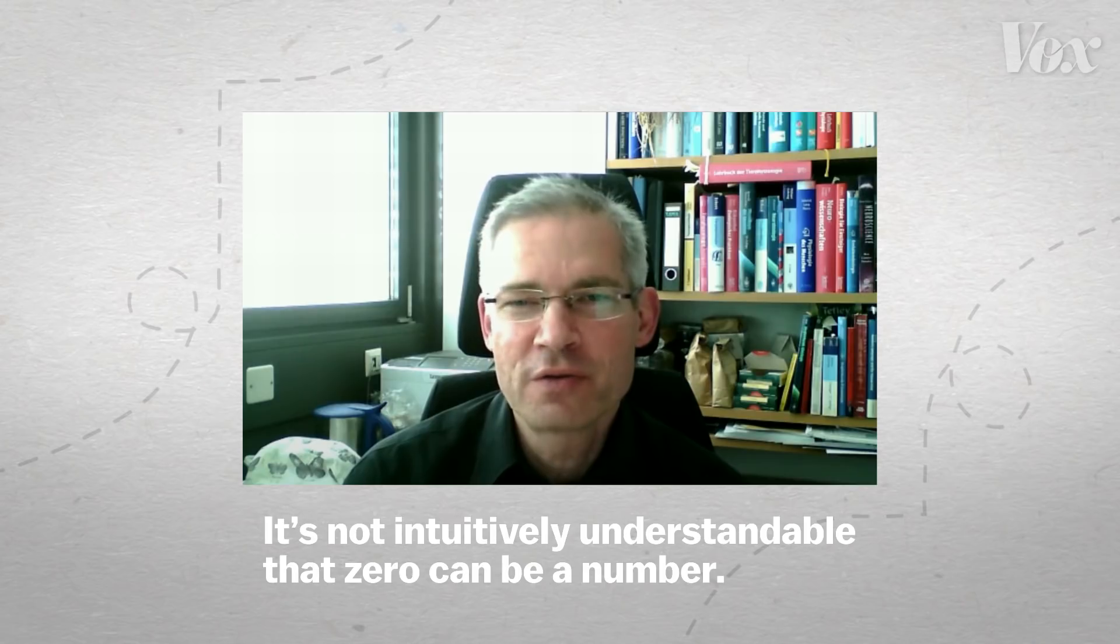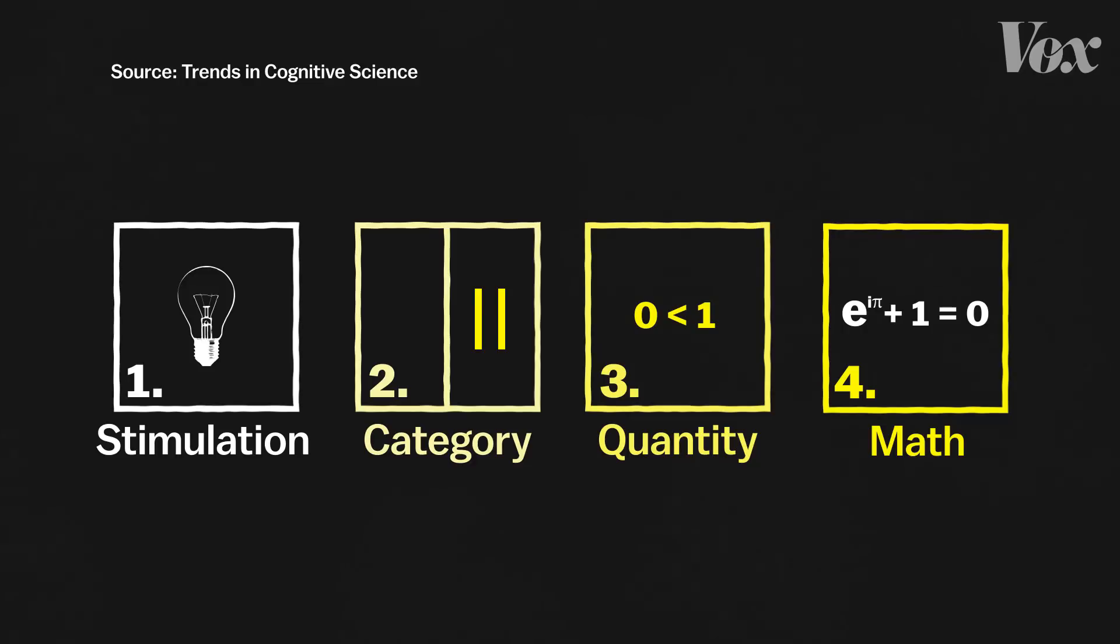It's not intuitively understandable that zero can be a number. Andreas Nieder believes that humans must comprehend four distinct stages of zero to fully understand the number.